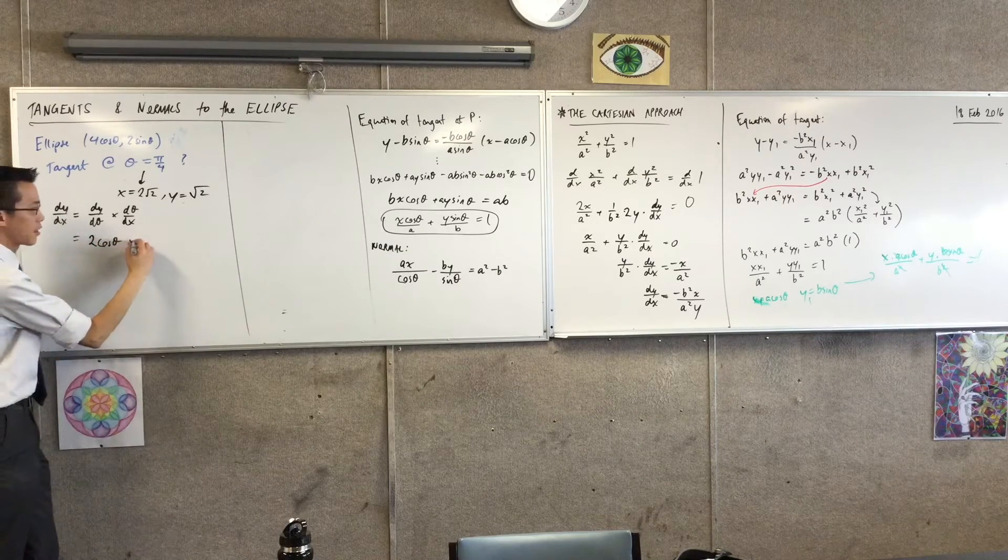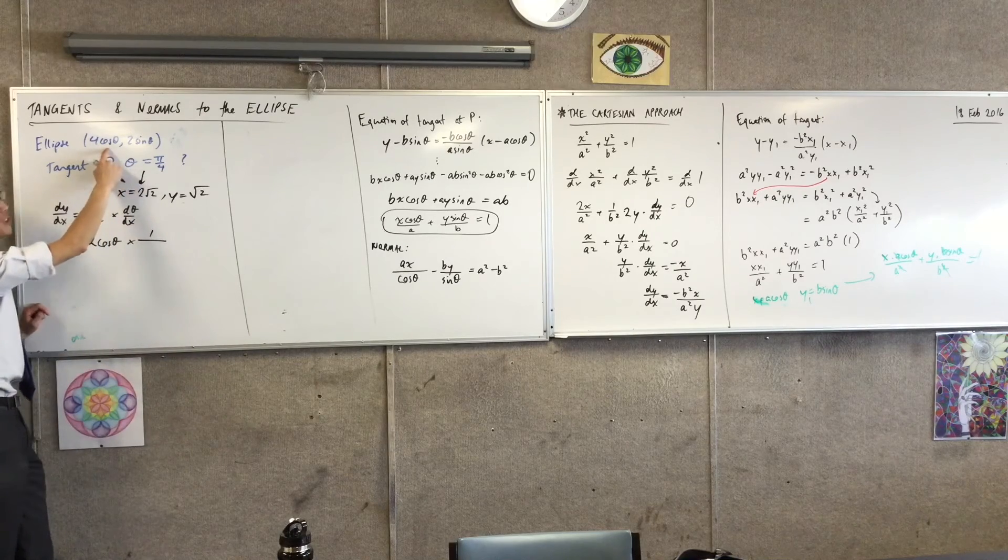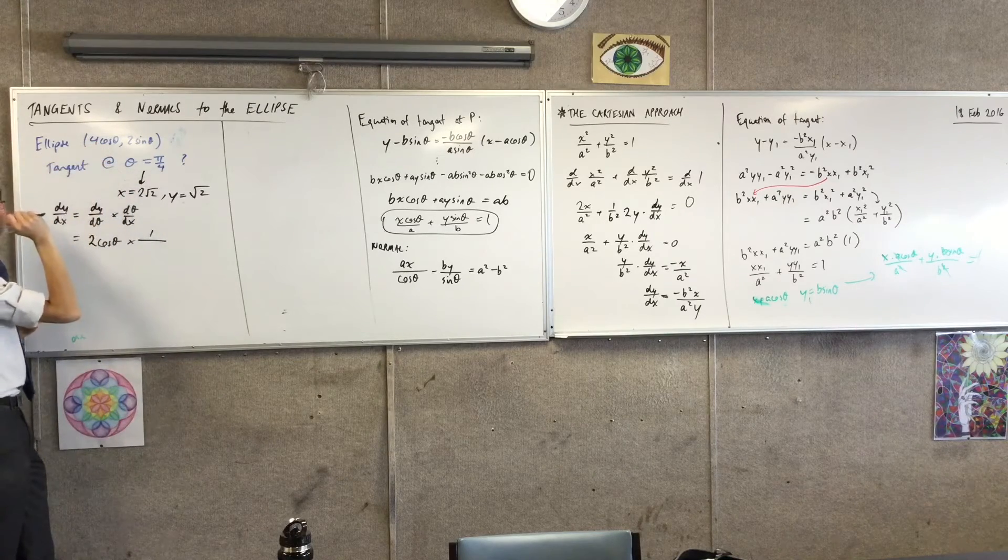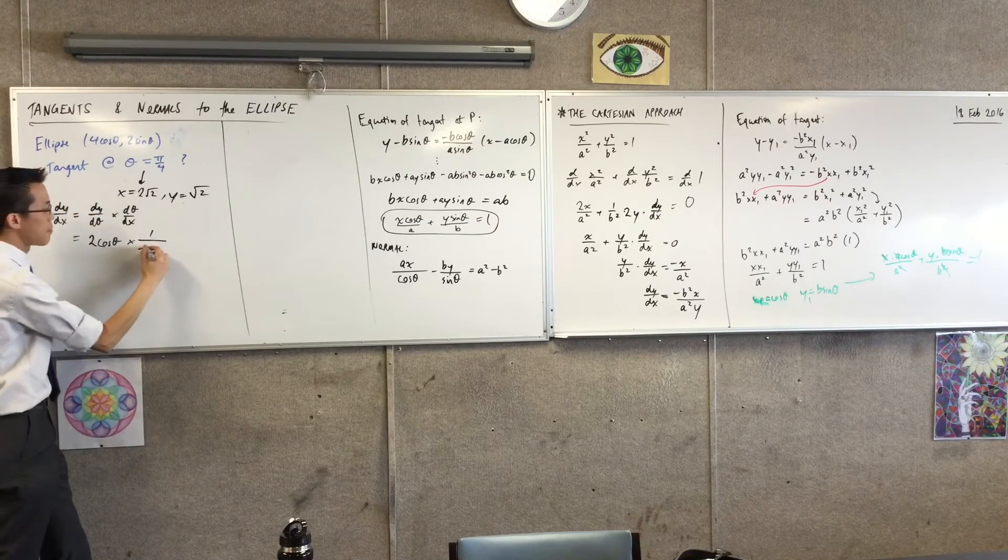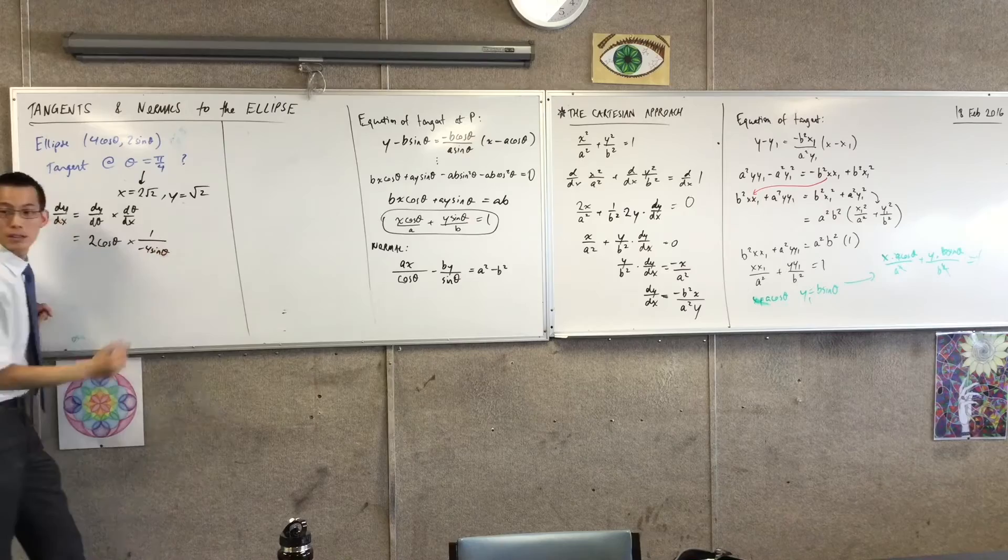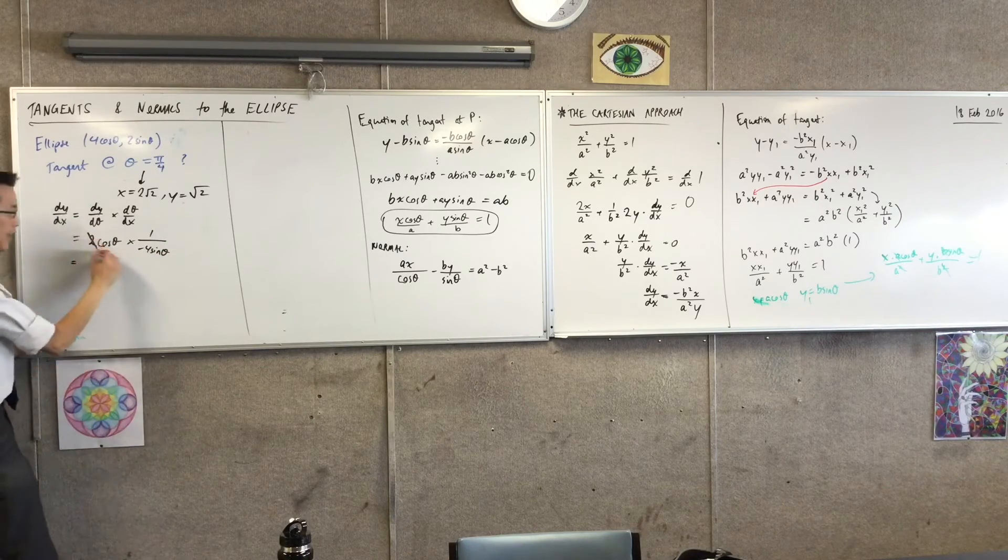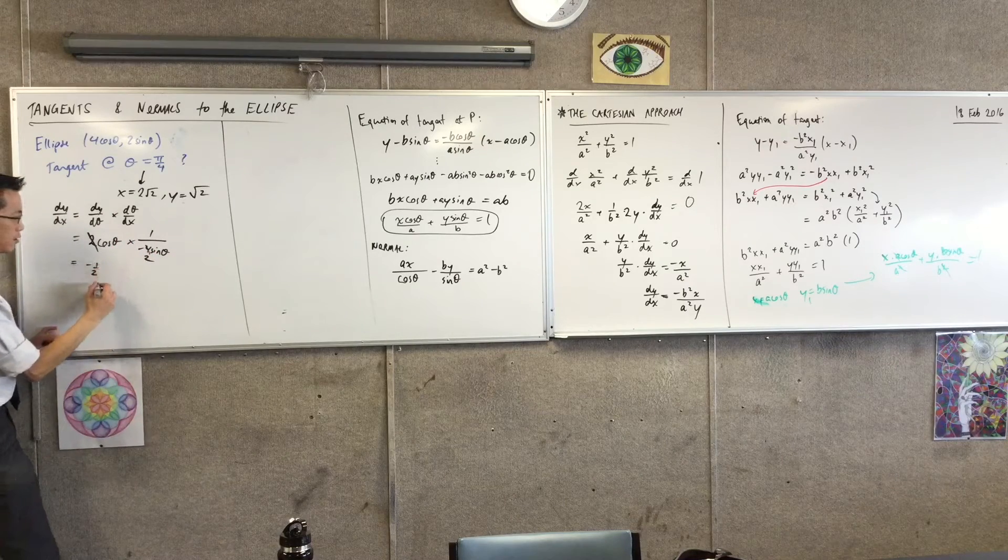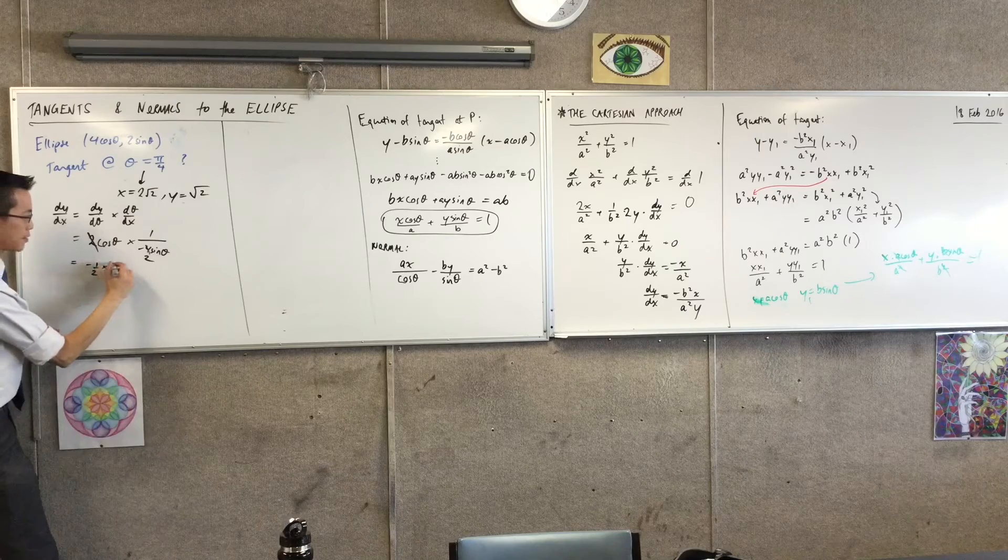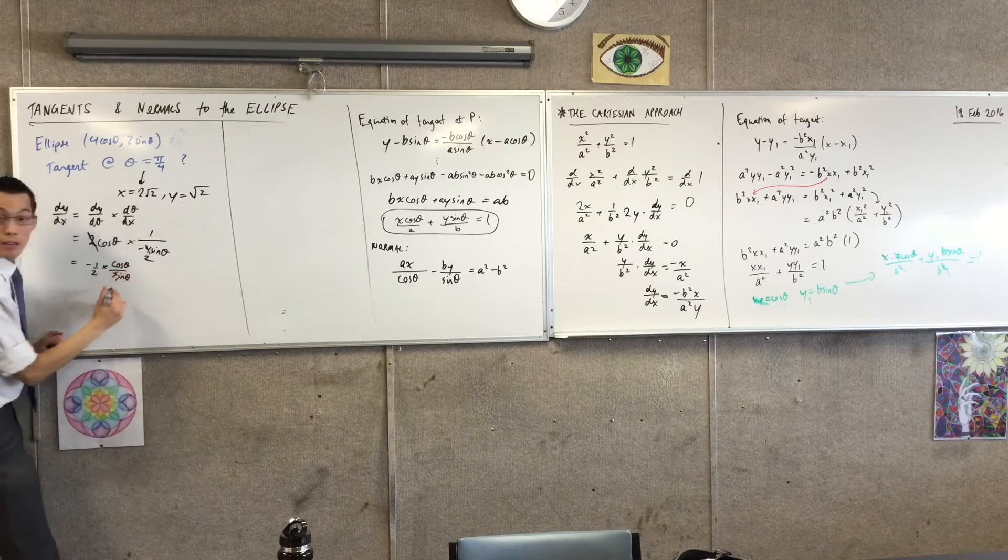And then I multiply by the reciprocal of this derivative, which is cos differentiates into minus sin, so this is minus 4 sin theta. Let's tidy this up, cancel, cancel. This is going to be minus 1 over 2 times cos theta over sin theta.